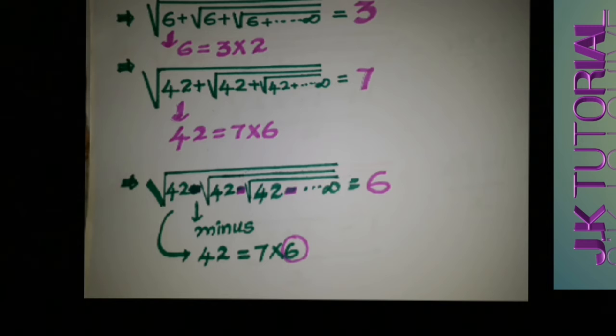If you see more examples like the square root of 20 plus the square root of 20 plus and so on to infinity, we write 20 as the product of two consecutive numbers: 4 times 5. Since the signs are positive, we take the larger value, which is 5. For these types we can take many values in this way.